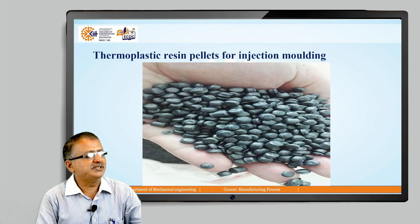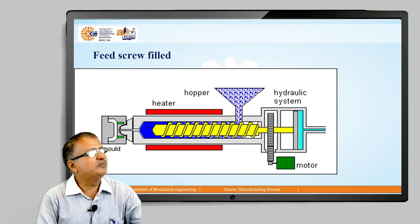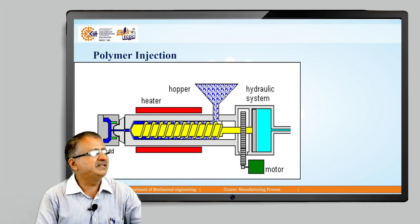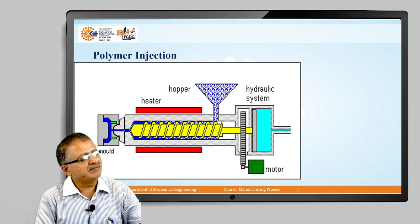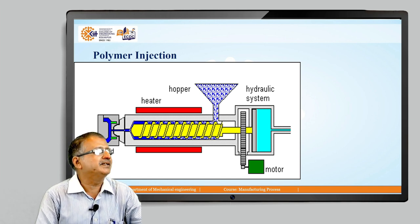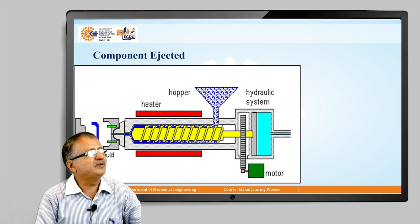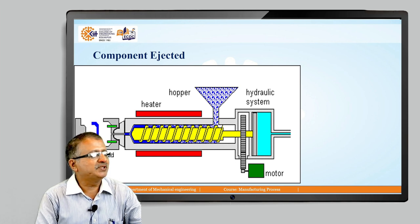The resin pallets are fed to the hopper, the feed screw is filled, and then it is fed to the barrel where there is a rotating screw and the barrel is surrounded by the heater. The heating system continuously melts those granules, and when sufficient melted plastic is available at the end, the hydraulic ram forces it through and injects it into the mold cavity through a sprue. Polymer injection is shown, and after that the component is ejected using ejector pins.